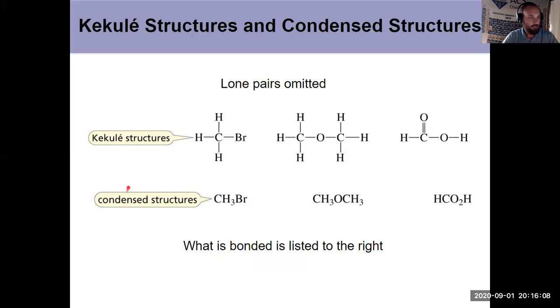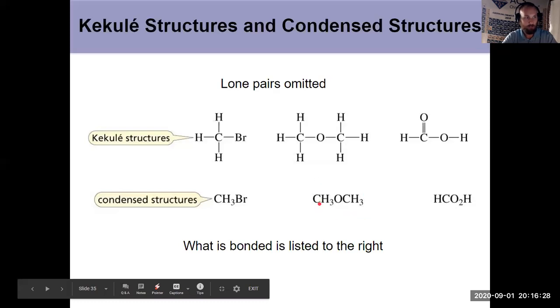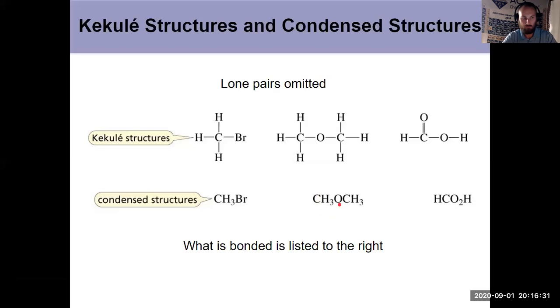Then we have a condensed structure down here. Those things kind of omit showing all the covalent bonds. They just list the atoms that are bonded to a particular carbon going left to right. You just have to know the fact that carbon has four bonds. As we go, taking this one in the middle here, that carbon has three hydrogens and an oxygen, and that carbon has three hydrogens of the same oxygen. This thing is an ether. Just requires a little bit of intuition. And again, condensed structures don't show lone pairs.